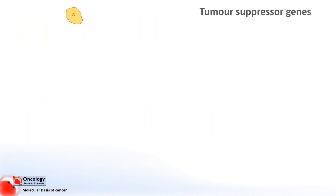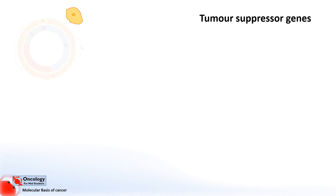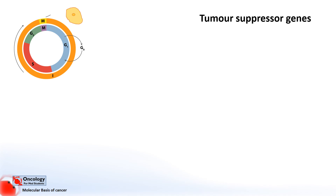Tumour suppressor genes are considered to be genes which code for proteins whose function is to prevent the formation of tumours, or to act as the brakes on the cell cycle. If the genes mutate in such a way that they produce proteins that cannot perform these functions, they can contribute to the development of cancer. Because the proteins are losing their normal function, these mutations are called loss of function mutations.